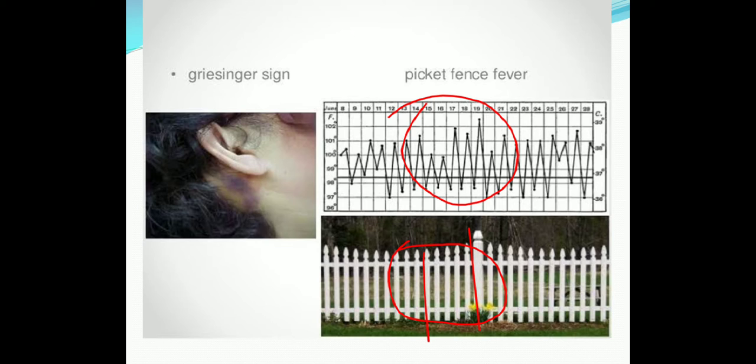Other symptoms include headache, anemia, and emaciation. So the three main symptoms to write are: picket fence fever, anemia, and headache.